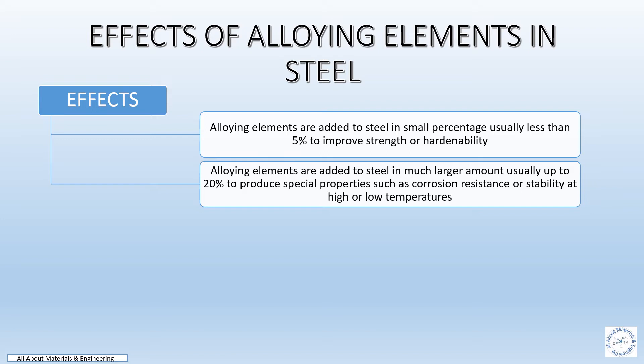Alloying elements are added to steel in much larger amounts, usually up to 20%, to produce special properties such as corrosion resistance or stability at high or low temperatures.